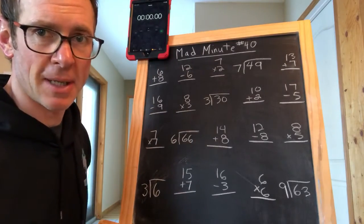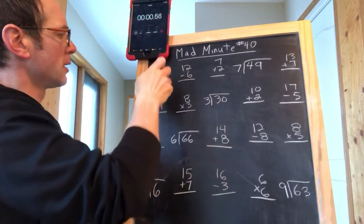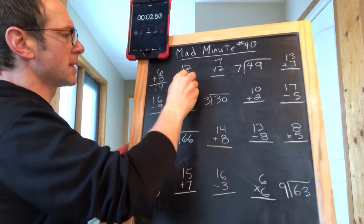Hi guys, here's mad minute number 40. All right, ready, set, go. 6 plus 8 is 14, 12 minus 6 is 6.